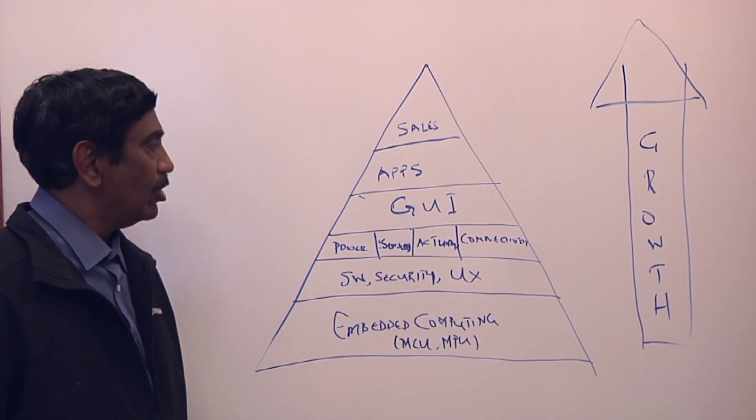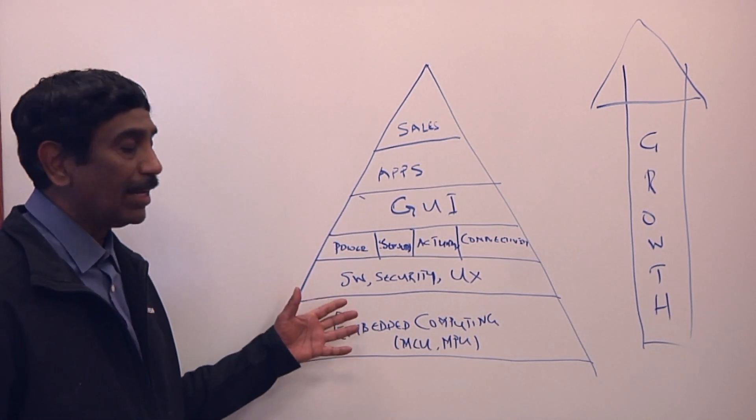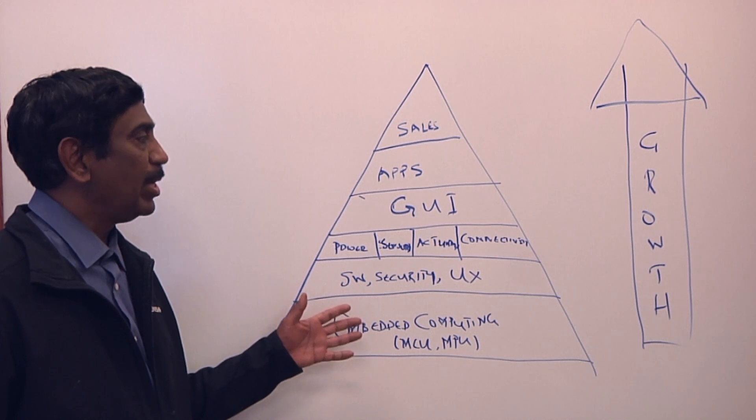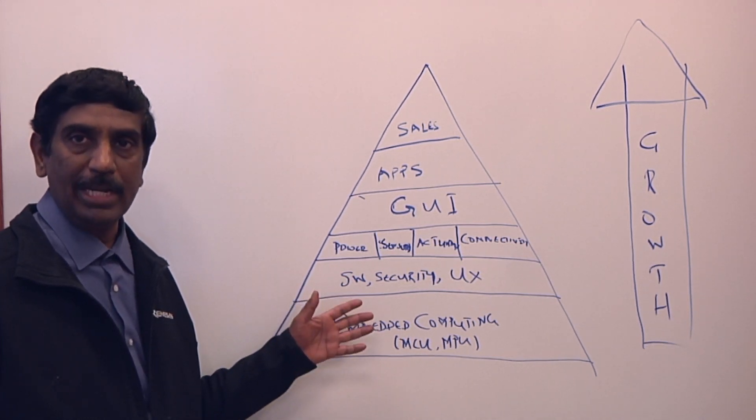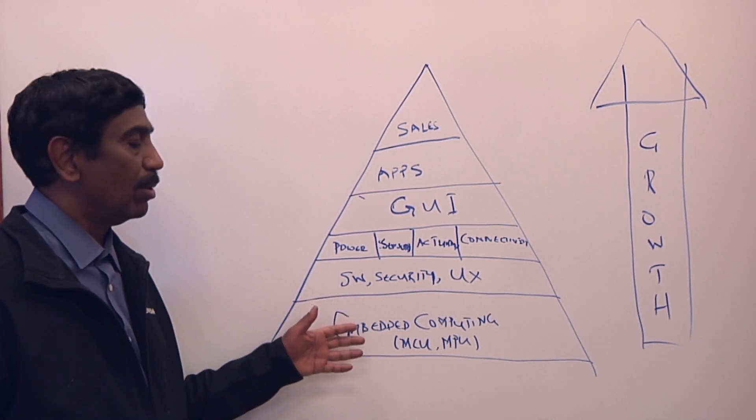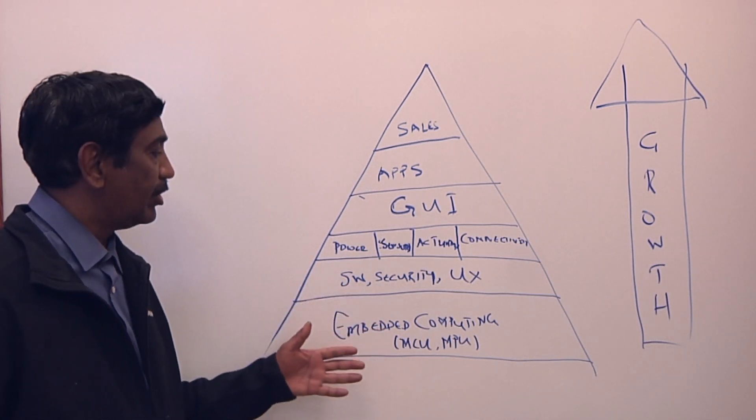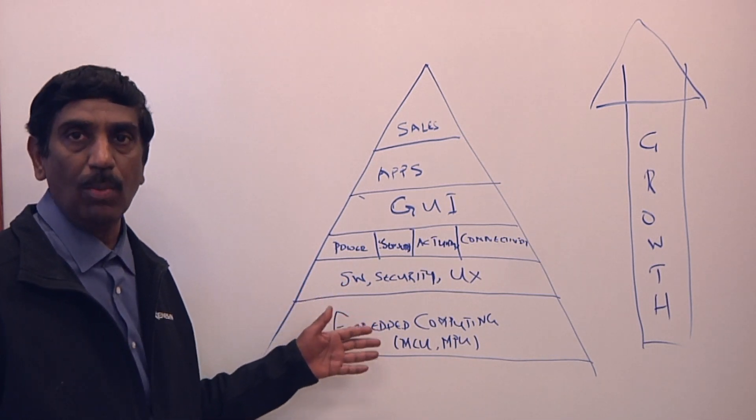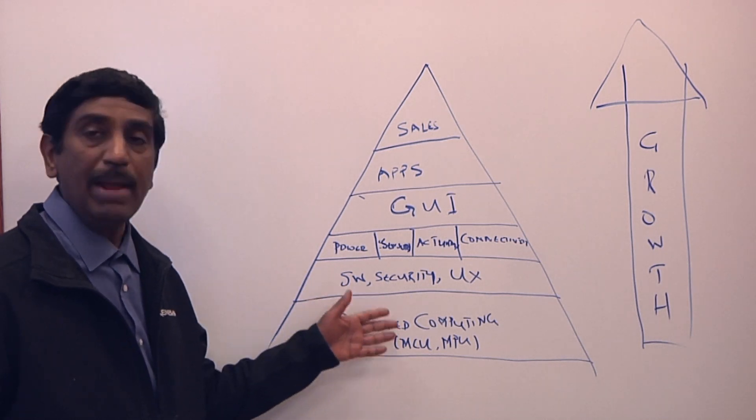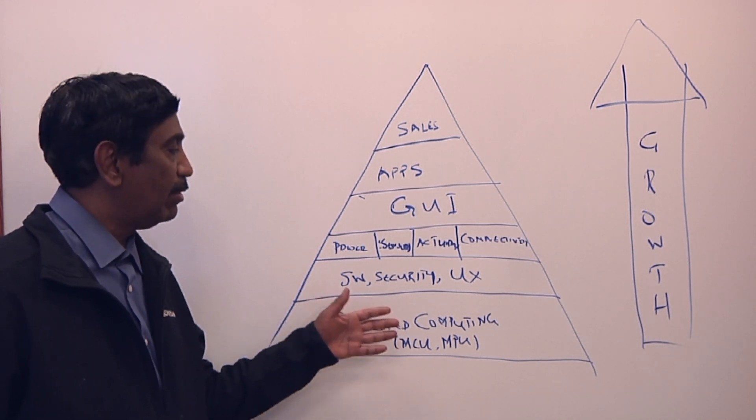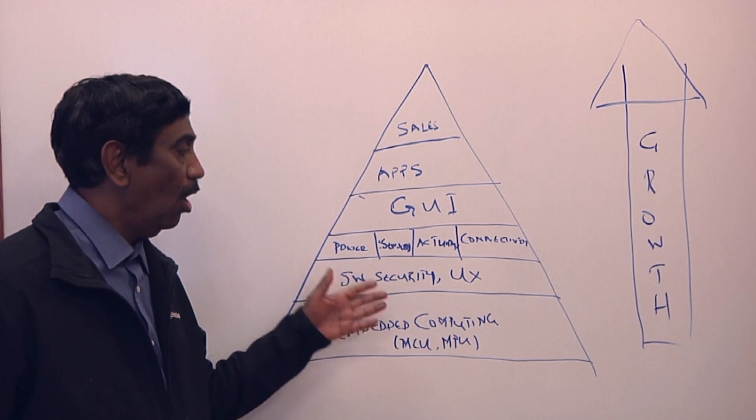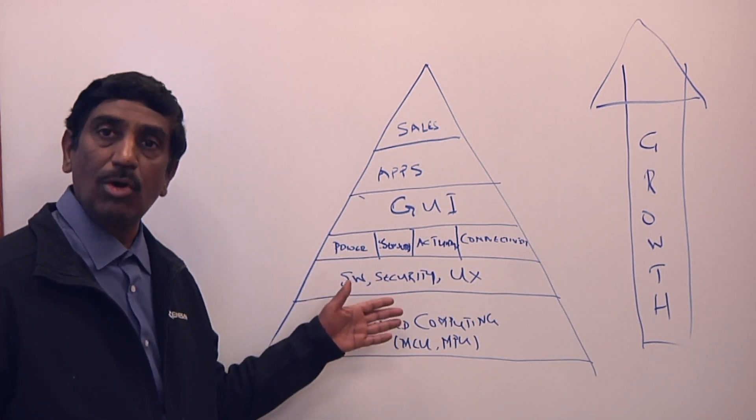Let's take a closer look. So Celeste, what are we looking at here? This graphically illustrates what we see happening in the marketplace with respect to the move of intelligence from the cloud to the endpoint. It all starts with embedded computing, whether it be MCUs or MPUs, which form the foundation of all intelligence at the edge or the endpoint.